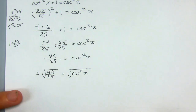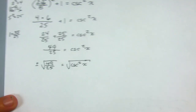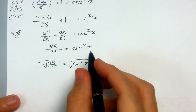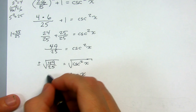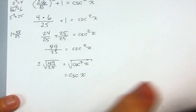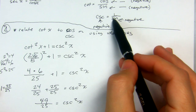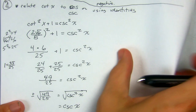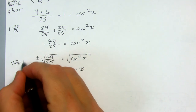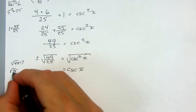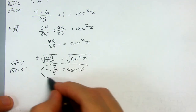I put plus or minus there because when you take the square root, you don't know if it was positive or negative. But we know the cosecant has to be negative because the sine was negative — that's what we figured out earlier. So the square root of 49 is 7 and the square root of 25 is 5, giving us negative 7 over 5. That's our cosecant value.